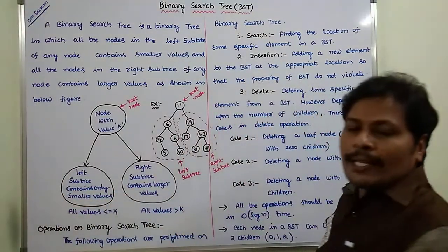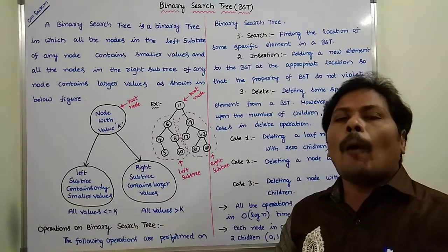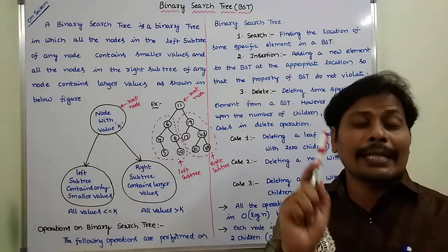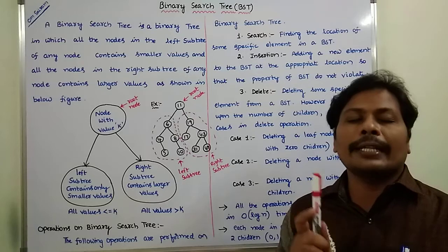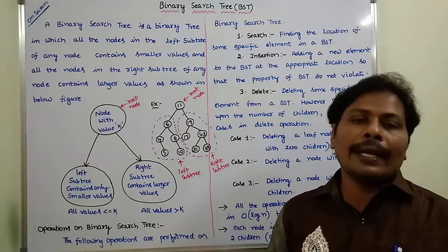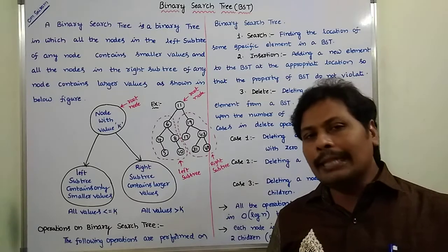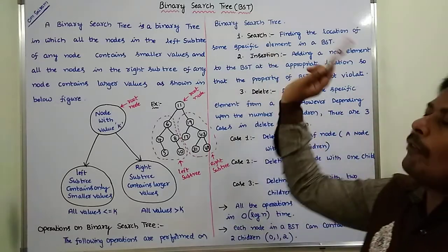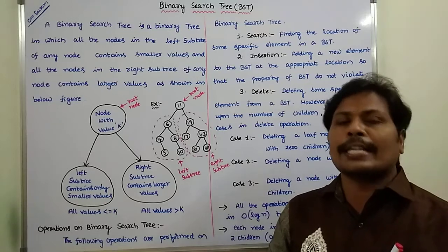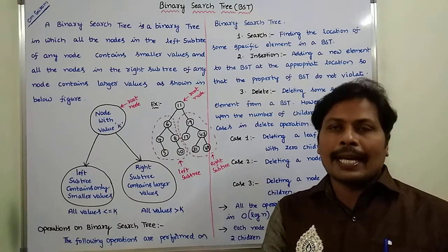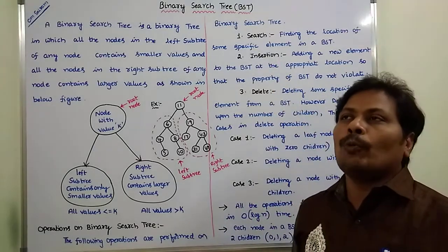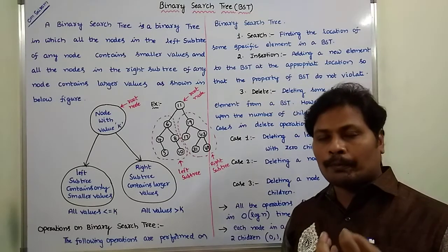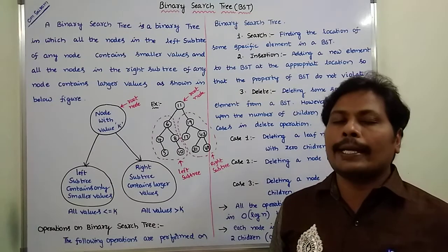Next, operations on binary search tree. There are several operations performed on the binary search tree. The main three operations are: first, search operation; second, insert operation; third, delete operation. All three operations can be performed in O(log n) time. Search operation means searching for a particular element in the binary search tree. Insertion means inserting one element at a particular location without violating the binary search tree property.